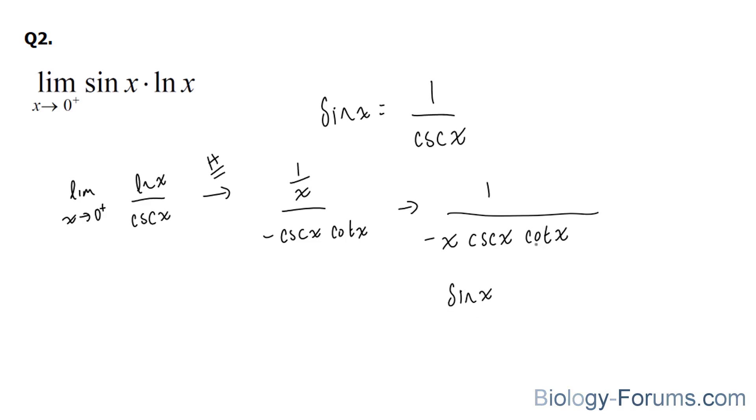And cotangent is equal to 1 over tangent. So we can write down tangent at the top. All I'm doing is rearranging.